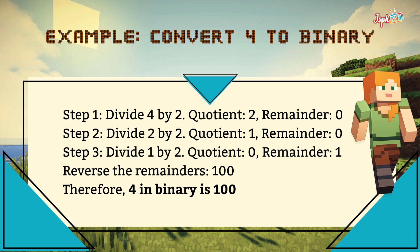Example: convert 4 to binary. Step 1: divide 4 by 2 — quotient is 2, remainder is 0. Step 2: divide 2 by 2 — quotient is 1, remainder is 0. Step 3: divide 1 by 2 — quotient is 0, remainder is 1. Reverse the remainders: 1, 0, 0. Therefore, 4 in binary is 100.